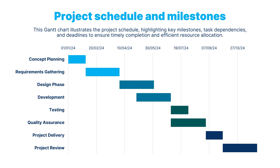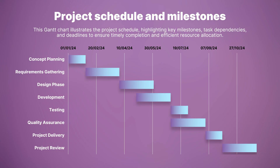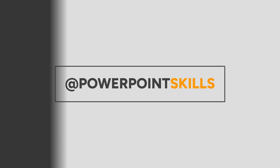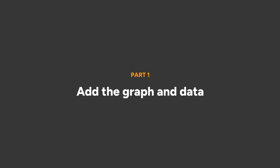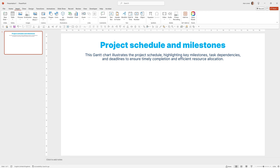Hi everyone and welcome back to another video. In this short tutorial I'm going to be showing you how you can make editable Gantt charts directly in PowerPoint. So let's jump straight into it. I'm just going to quickly start off with a title and subtitle and then add the chart. We're going to start off by using a stacked bar chart and then convert it into a Gantt chart.